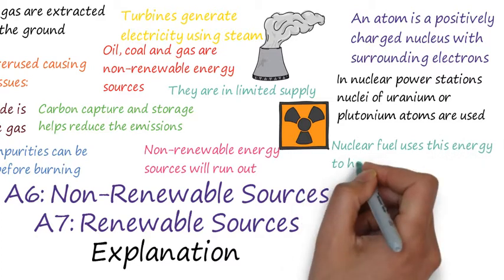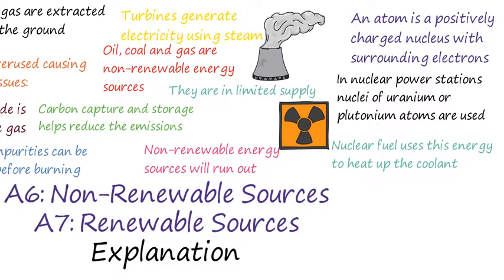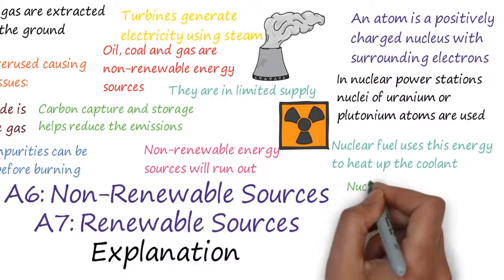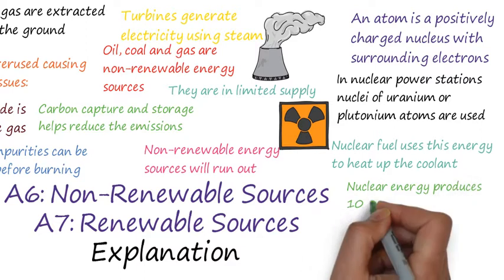Nuclear fuel uses energy in the core of a reactor to heat up a liquid called the coolant. The coolant flows out of the core by pipes through a heat exchanger and then flows back into the reactor. The energy transferred by the coolant boils water which produces steam and turns a turbine, generating electricity.